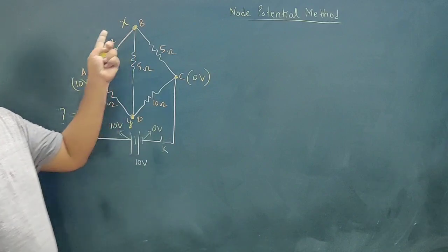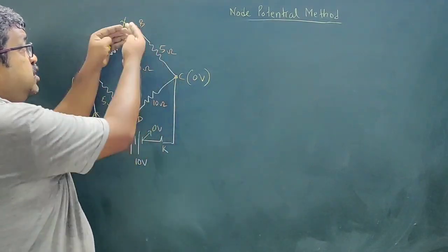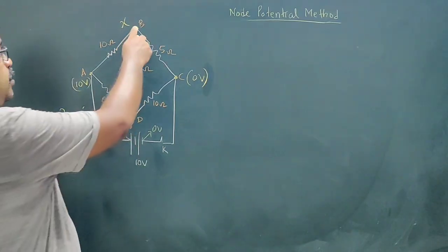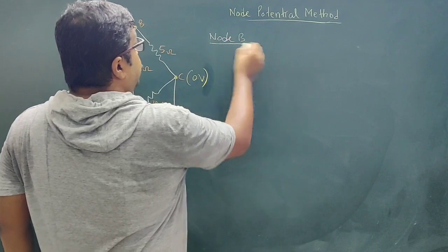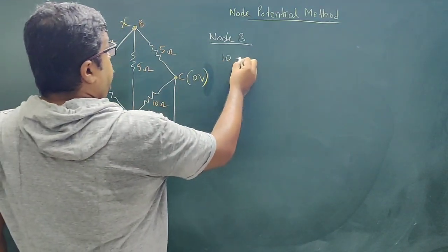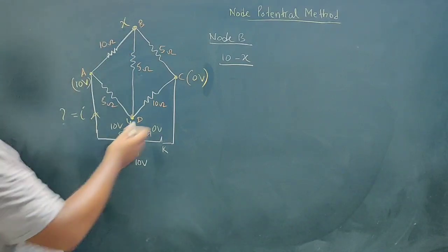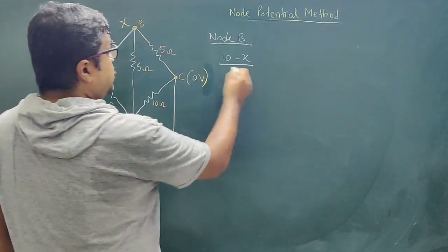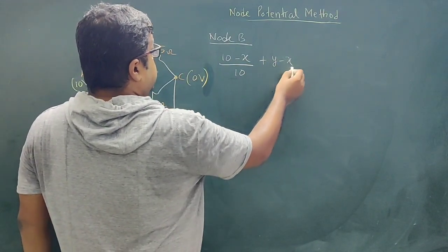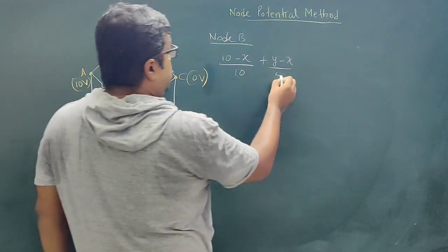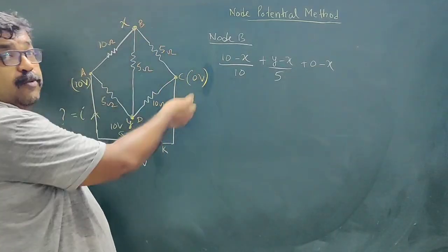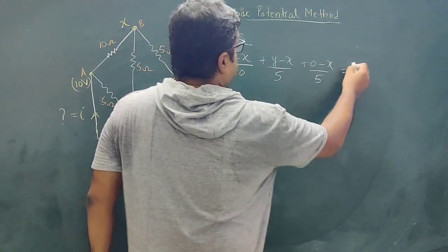At node B, assuming the potential is lowest, the current coming from the 10 V side is (10 minus X) divided by 10. The current coming from node D (potential Y) is (Y minus X) divided by 5. The current from the 0 V side is (0 minus X) divided by 5. Setting the sum equal to zero: (10 minus X)/10 plus (Y minus X)/5 plus (0 minus X)/5 equals 0.